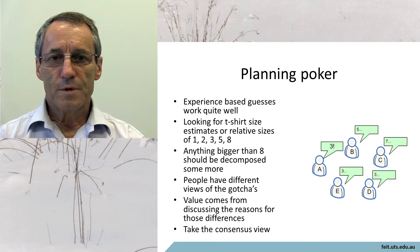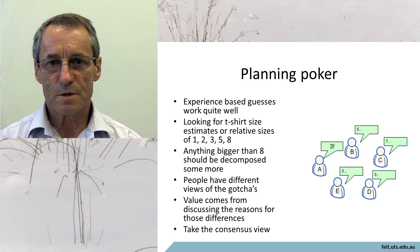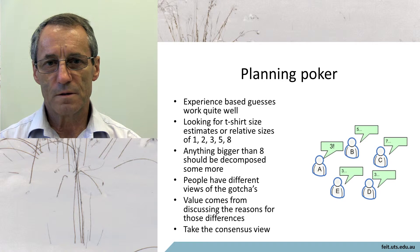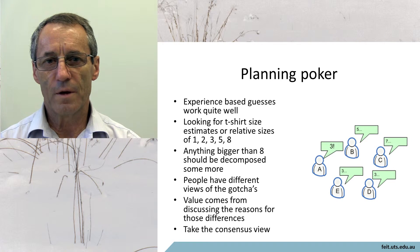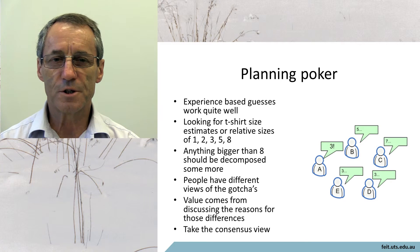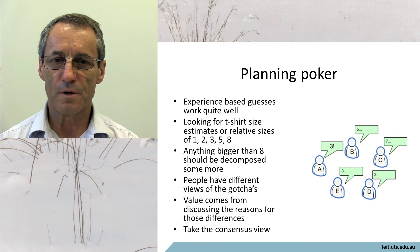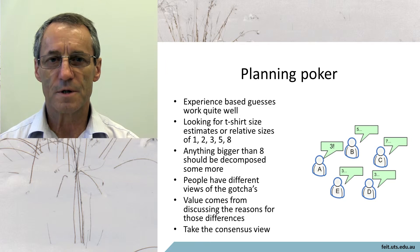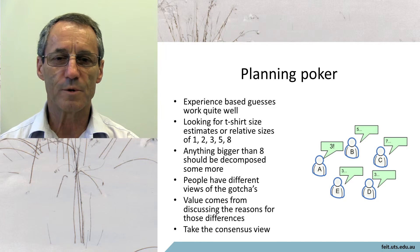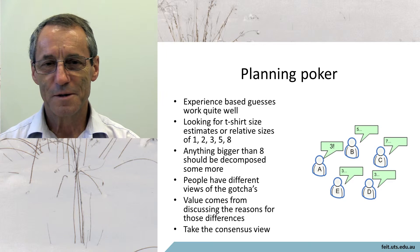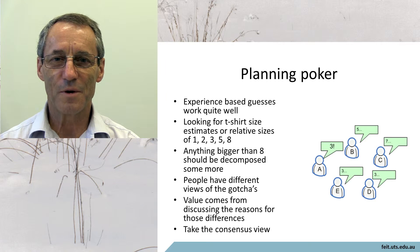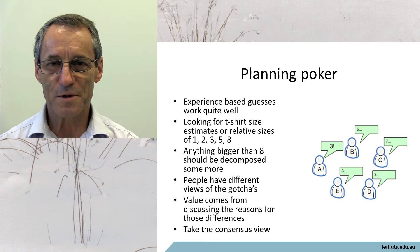In contrast to function points, a lot of agile projects depend on the knowledge, expertise, and professional judgment of the developers themselves. Which is quite reasonable, because agile development depends on professional judgment and assumes you've got professional competence going on there.